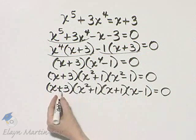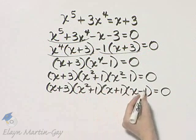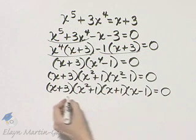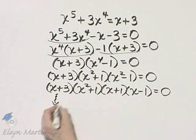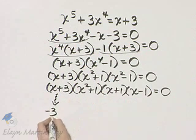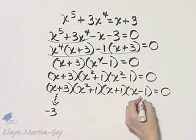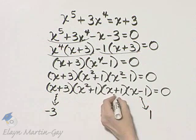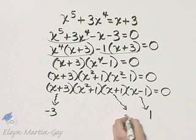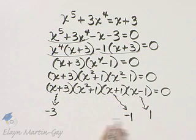Now, set each one of these equal to zero. I'll let you do that. If you set this equal to zero, it gives you an answer of negative 3. If you set this factor equal to zero, you'll have an answer of 1, and if you set this factor equal to zero, you'll have an answer of negative 1.